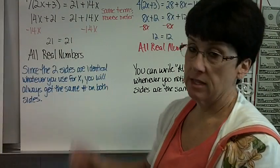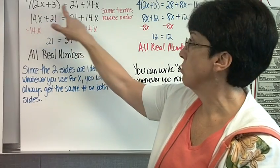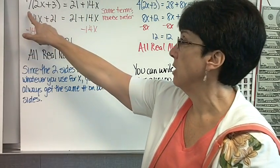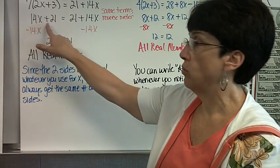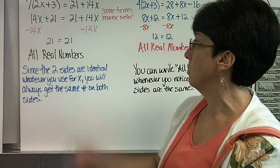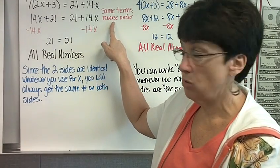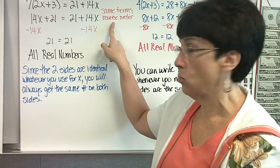One more thing. The other one. Seven times the quantity of 2x plus 3 equals 21 plus 4x. Do the distributive property. Seven times 2x is 14x. Seven times 3 is 21. So 14x plus 21 equals 21 plus 14x. Do you notice that these are the same terms but in reverse order? Well, if you do, that's good. If you don't and just doing the work, let's subtract the smaller one.